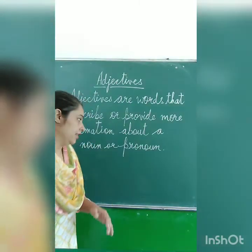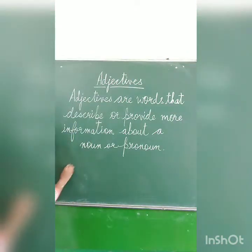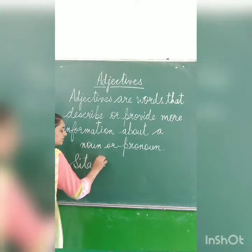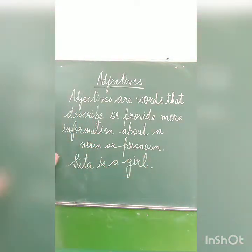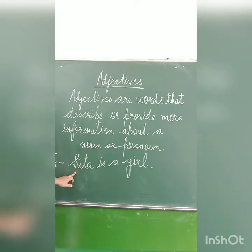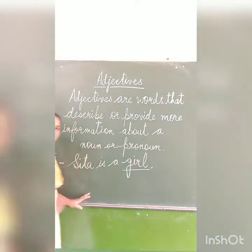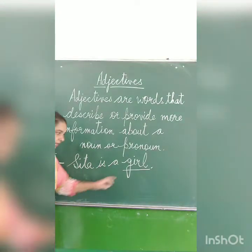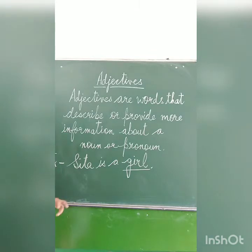And remember, they are always placed before a noun. See, one example: Sita is a girl. This is a noun — Sita is a proper noun, and girl is a common noun. So here, Sita is a girl — it's a simple sentence. No description of Sita is given. No extra word is added to describe Sita.